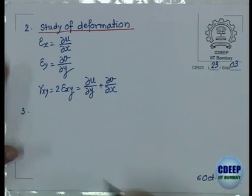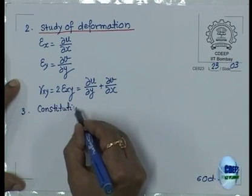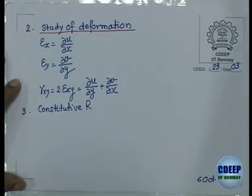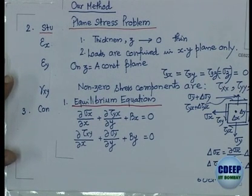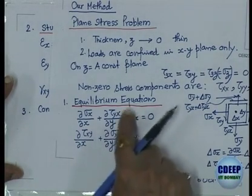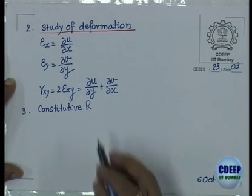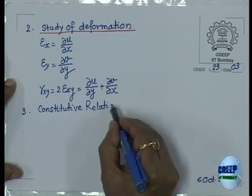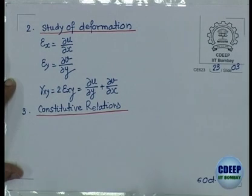That is where we need constitutive or material law - you must study the stress-strain relation. Body forces are always known quantities - they depend on density, weight per square meter in a plane problem. We will specify how many kilograms per meter squared. For constitutive relations, we use Hooke's law - I will take the simple case of isotropic material with no temperature change.